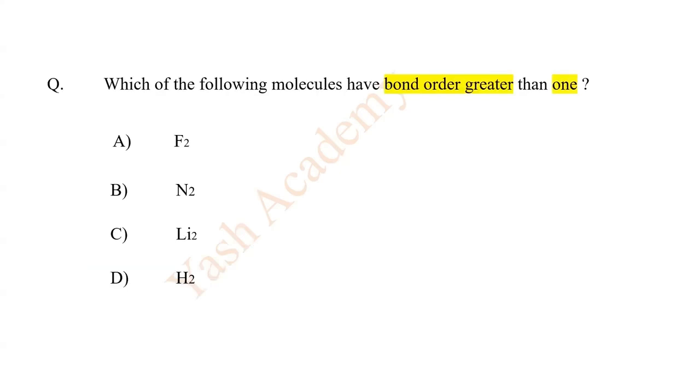Which of the following molecules have bond order greater than 1? The answer is B: nitrogen.